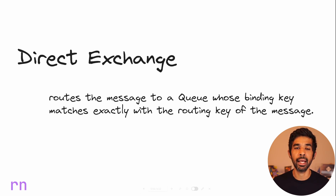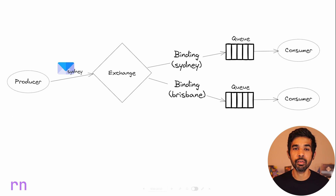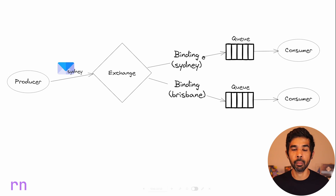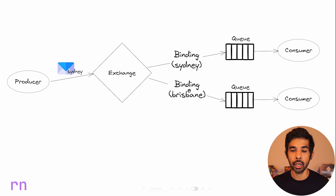Both keys must be an exact match. So when defining a binding, if we specify the key as Sydney or Brisbane, the exchange looks at the incoming message and checks the routing key. Since the routing key is Sydney, it sends a copy of this message only to the binding that has Sydney as its binding key, so only that queue gets this message. You can have multiple bindings going to this queue, and similarly you can have multiple bindings going to different queues.